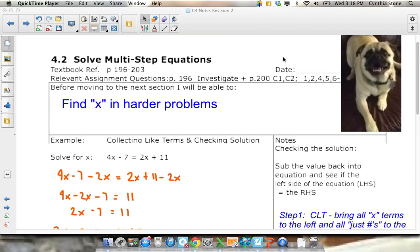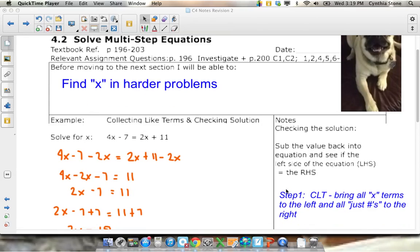The first question we're going to do involves two things which are relatively new. One is collecting like terms - you've done it before, just maybe not solving equations. The second thing is checking solutions. We'll worry about checking until we're done because you need a solution to check. Step one, collect like terms. What I need to do is bring all the x's to the left side of the equation and all the just numbers to the right side.